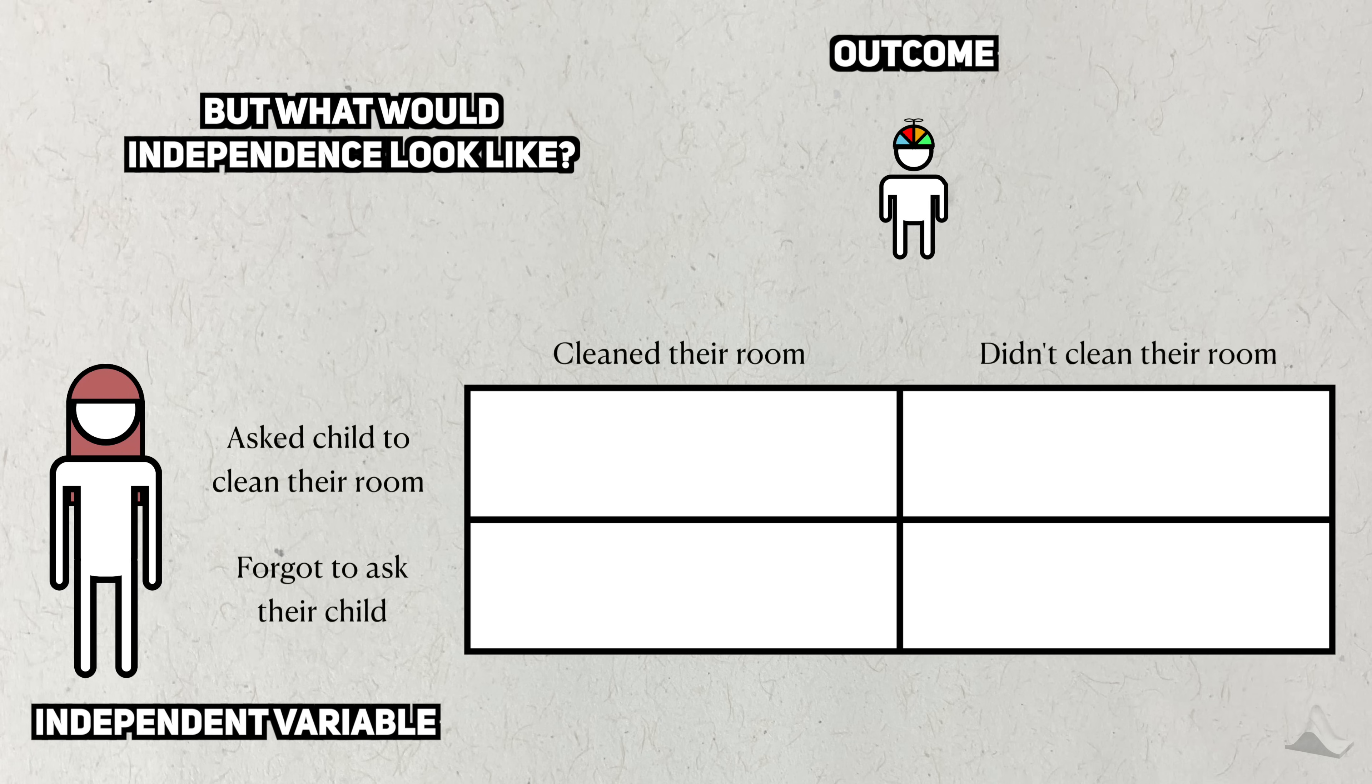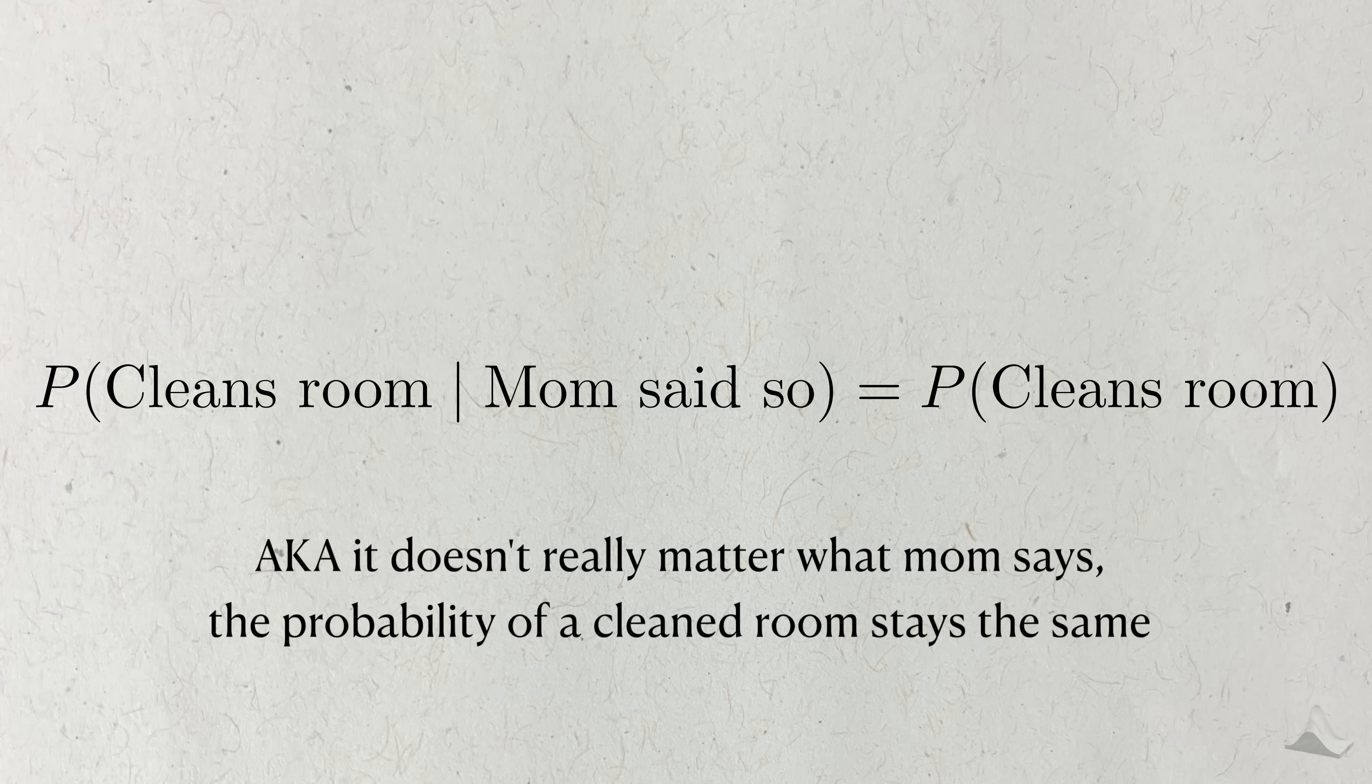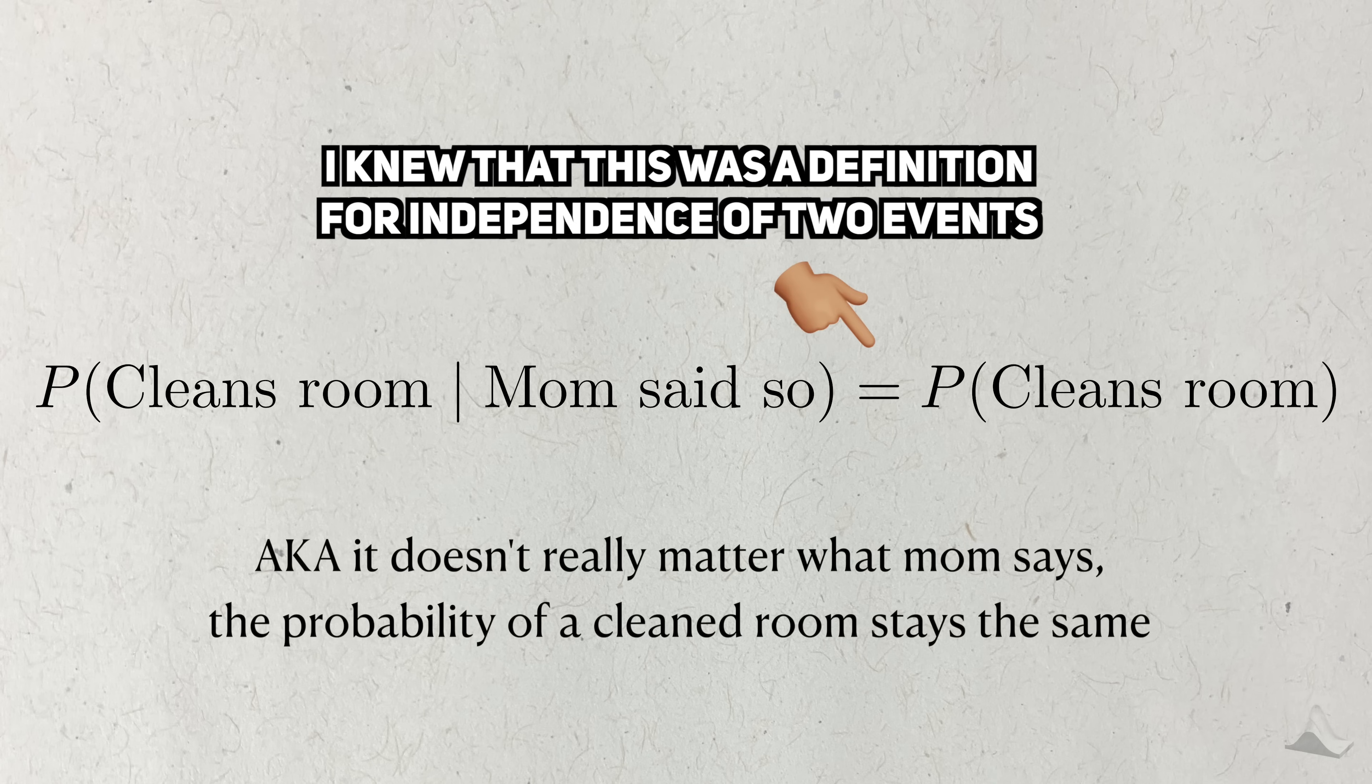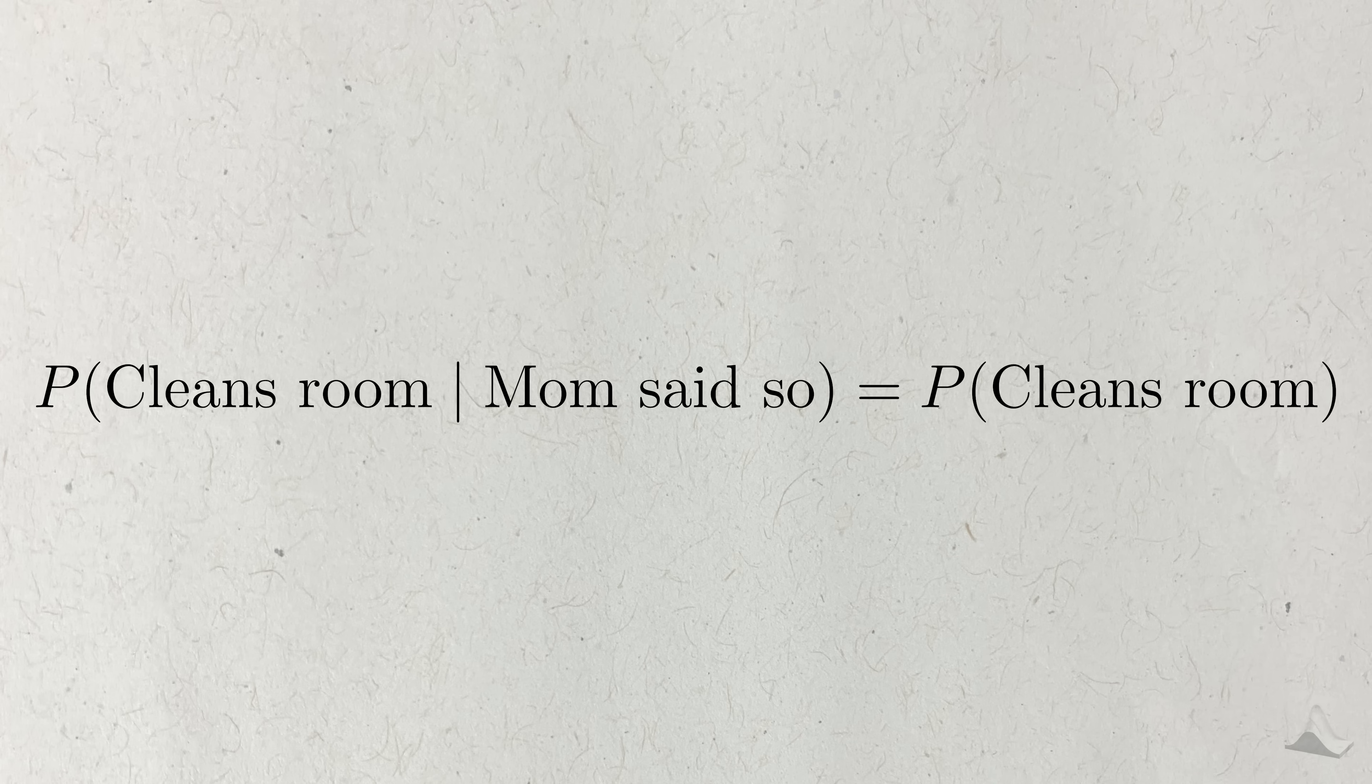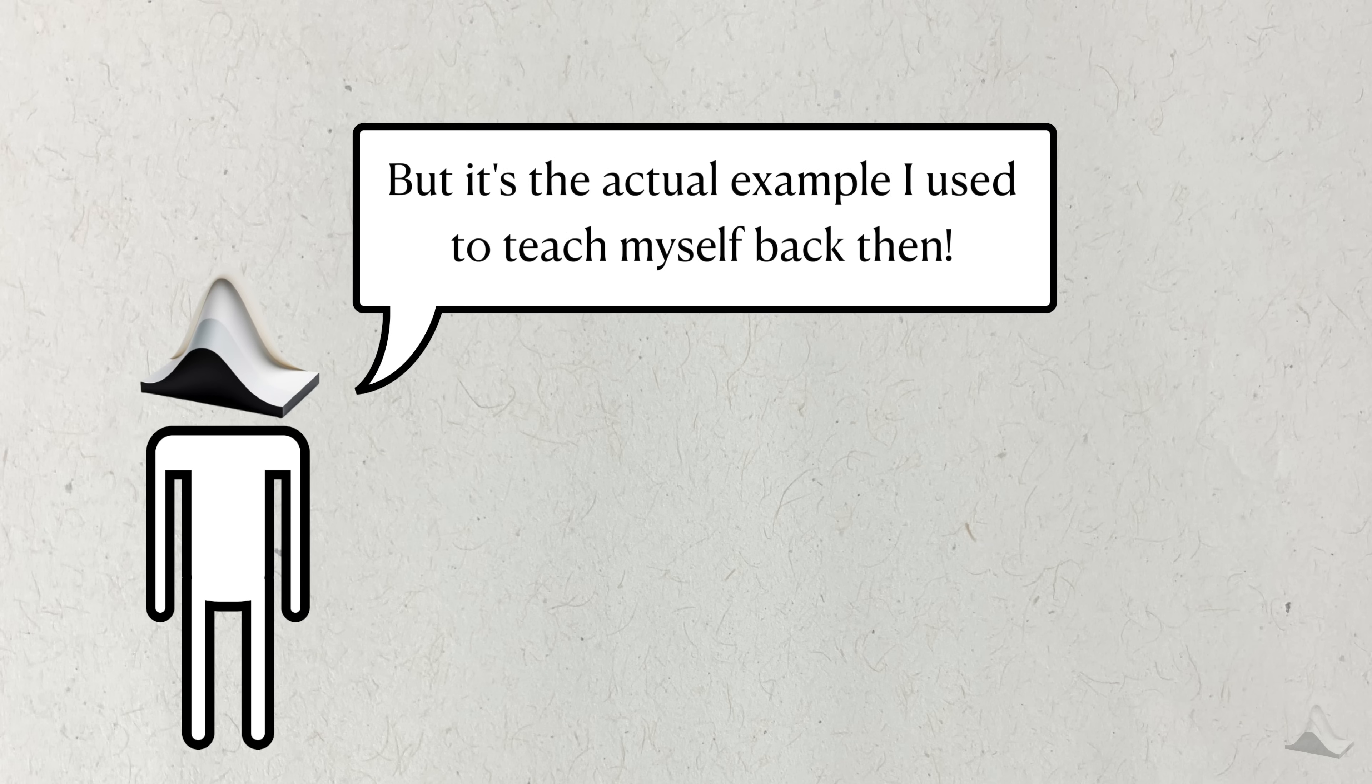Then I tried to figure out what a world would look like if they were independent. I thought of a world where this kid was now a teenager who was less inclined to listen. If they didn't listen, then the rows should look the same. The probability of them cleaning their room would be the same, no matter what their parents said to them. I knew that this is one of the definitions of independence, so that's how I finally made the connection between the chi-squared test and the idea of independence between the rows and the columns. And look, it's not a great example, but it's the actual example I used back then to put the chi-squared test into more concrete terms.